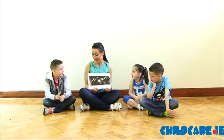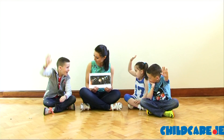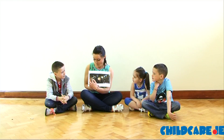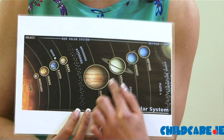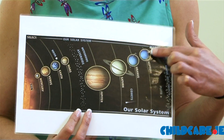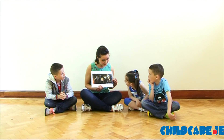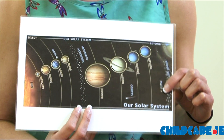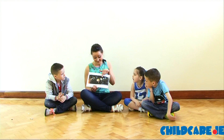And who remembers how many planets we've got in our solar system? Spencer, do you remember? Eight. So shall we count them? One, two, three, four, five, six, seven, eight. And do you see this little one down here at the bottom? This is Pluto. Pluto used to be one of the planets in the solar system — we used to have nine planets but now we only have eight.